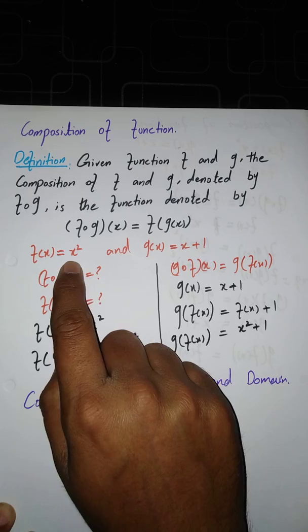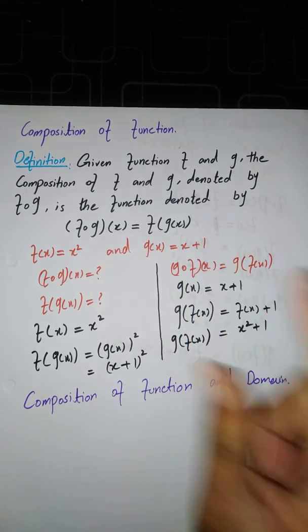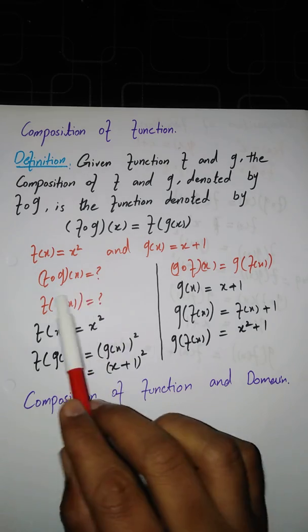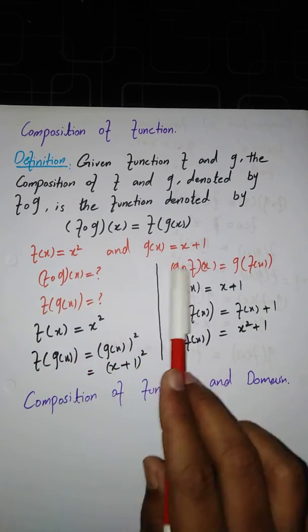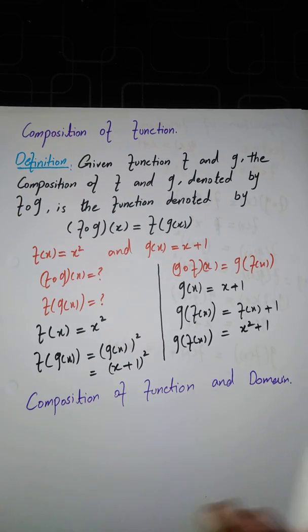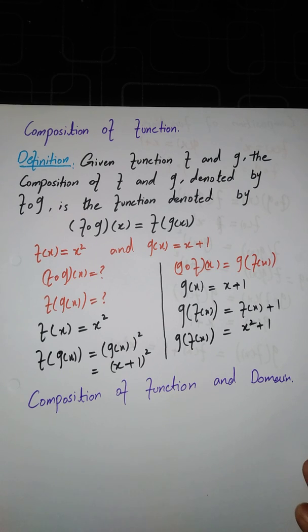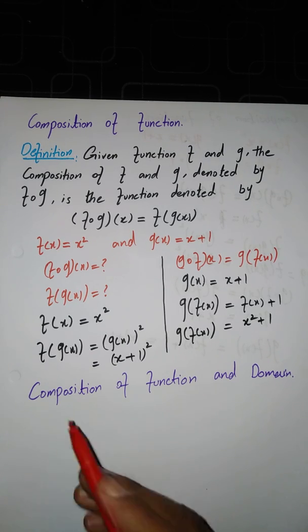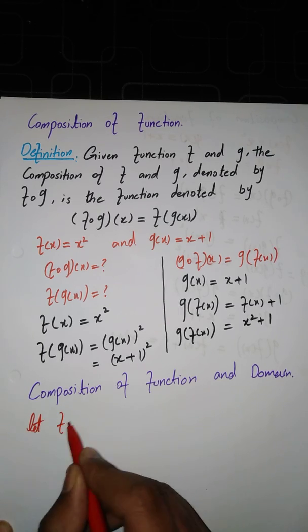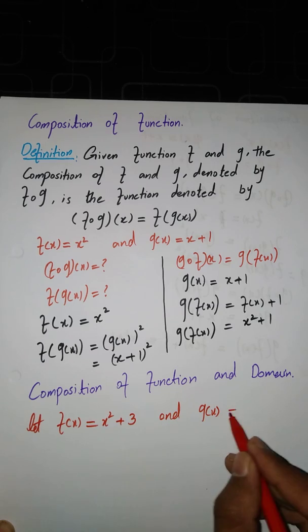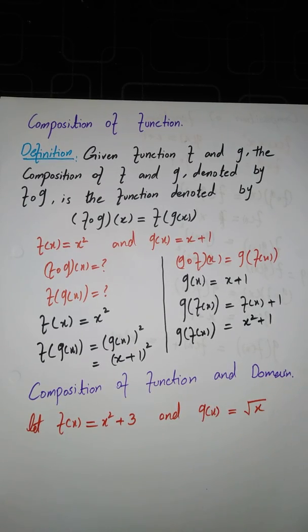In our first example, the domain of both f(x) and g(x) were the set of all real numbers, so the domain of f(g(x)) was also all real numbers from negative infinity to positive infinity. To better understand domain and composition of functions, let's take a more involved example. Let f(x) = x² + 3 and g(x) = √x.